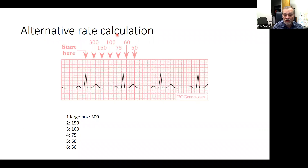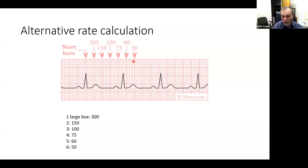Here's another quick way to calculate the rhythm. If you have a regular rhythm, you can look at the large boxes between the R waves. One large box (five small boxes) equals a rate of 300. Every two large boxes equals 150, every three equals 100, and so on, down to 50. That's a quick way you can eyeball the rhythm.